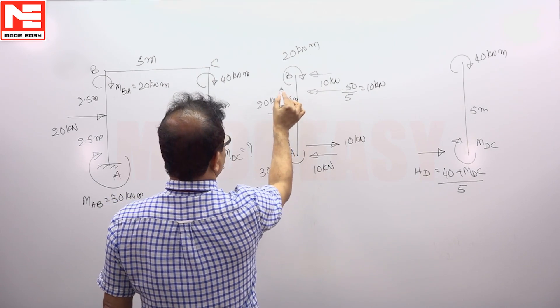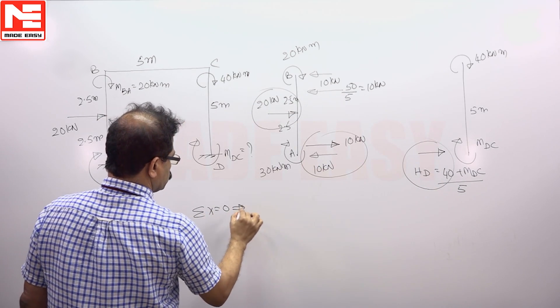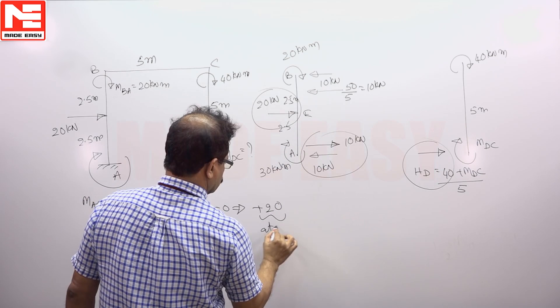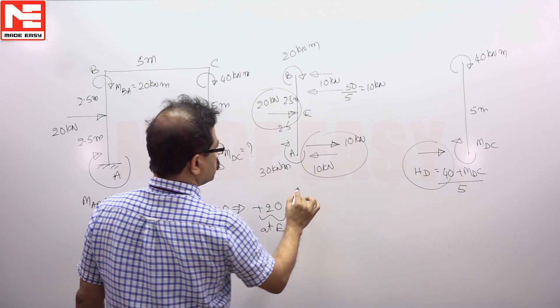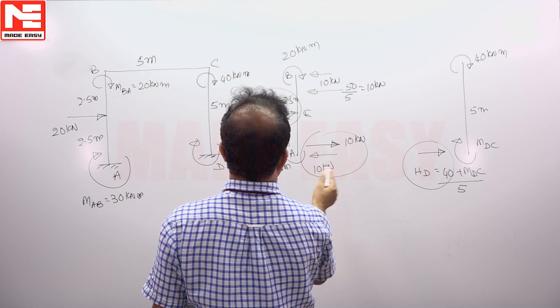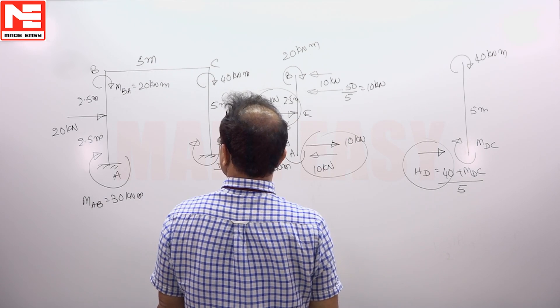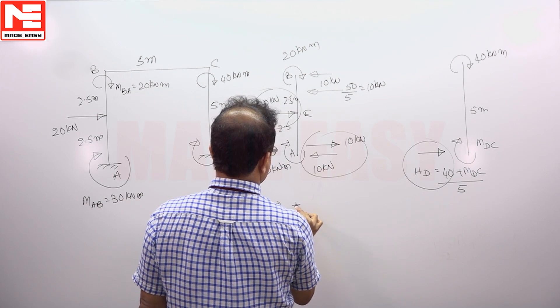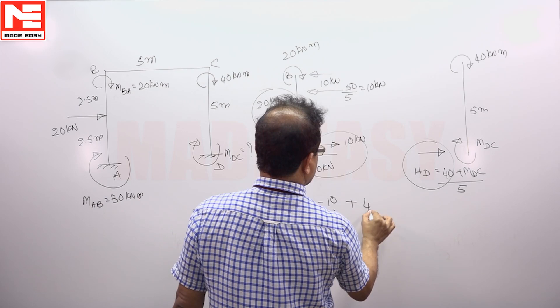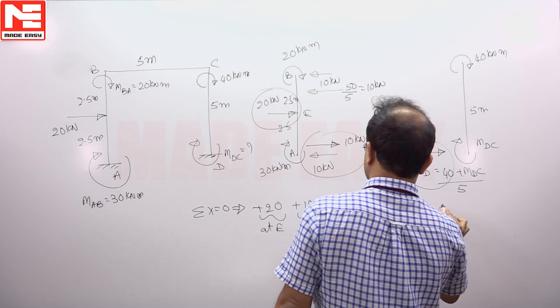So, sigma x equals 0 when you take, you have to take 20 at 20, this and this. Sigma x is equal to 0, plus 20 at E. Then clockwise, here H_A is 0 plus 0, plus 10 minus 10. This is at A plus 40 plus M_DC by 5 must be equal to 0.